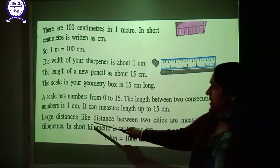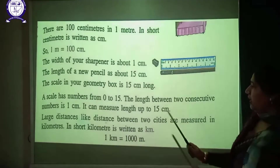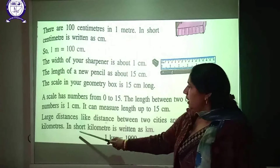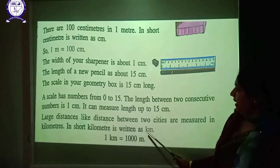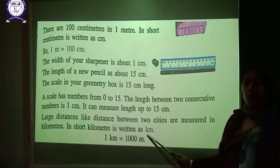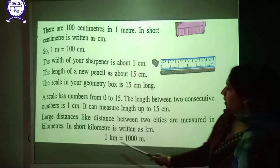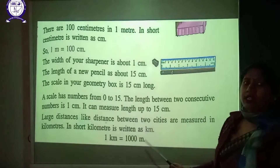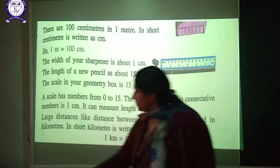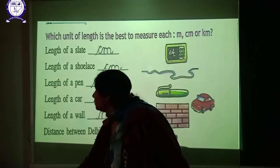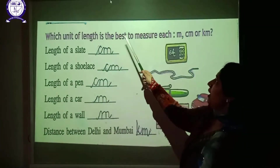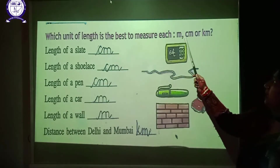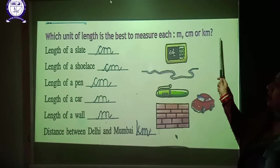Large distances, like the distance between two cities, are measured in kilometers. The short form of kilometer is 'km'. One kilometer is equal to 1000 meters.